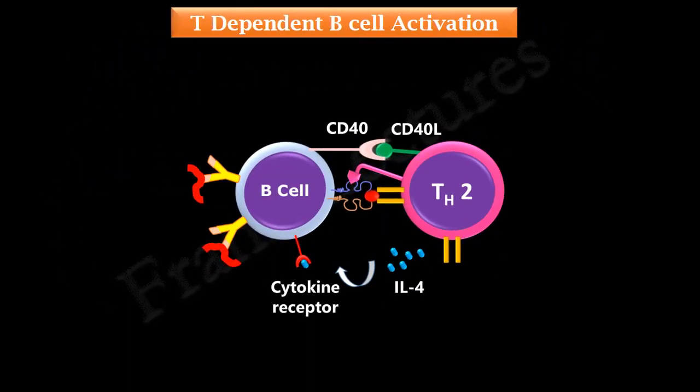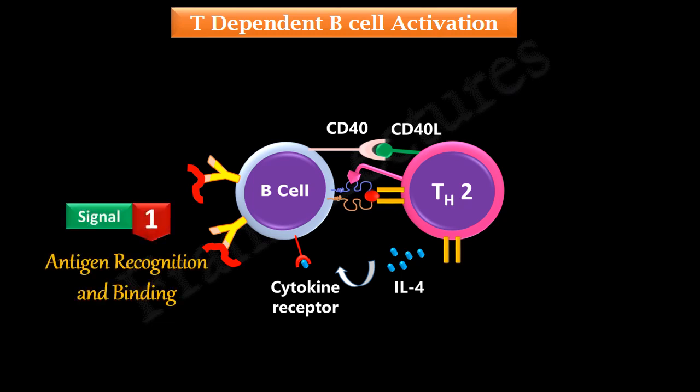T-dependent B cell activation takes place when the antigen is not multivalent — for example, protein antigens. In this case, activation of the B cell takes place by a three-signal process. Signal 1 is derived from the antigen recognition and binding to B cell receptors of the B cell.